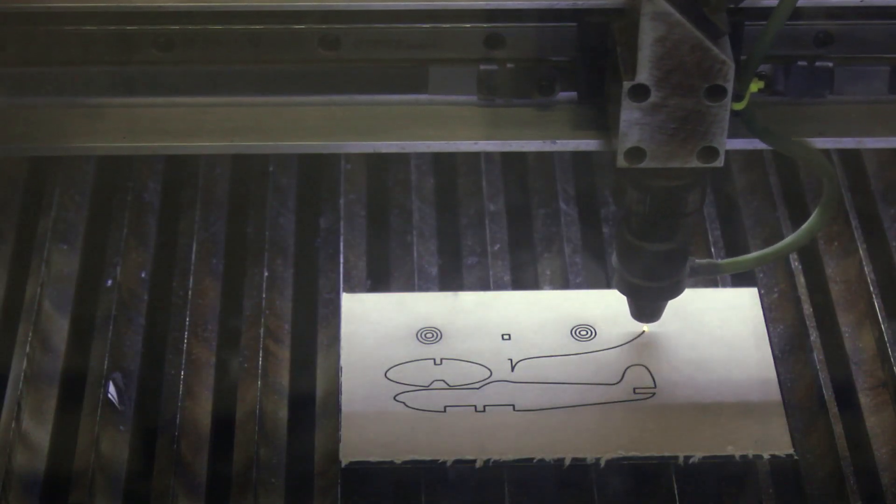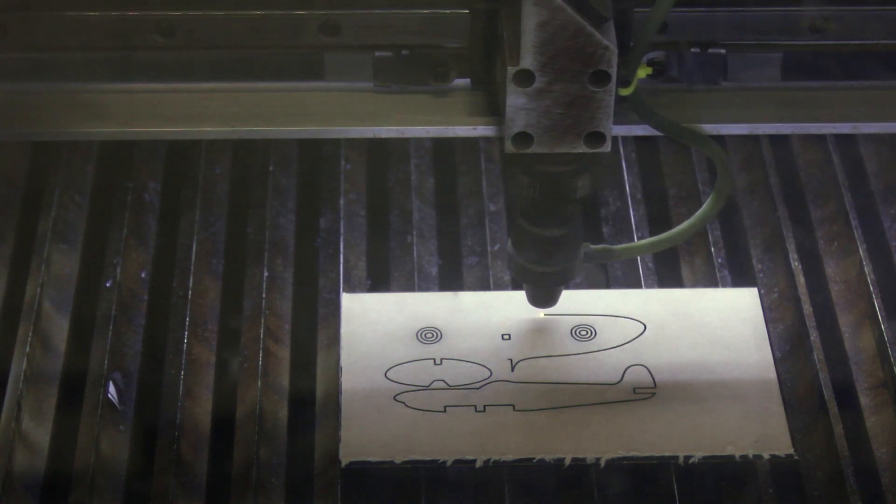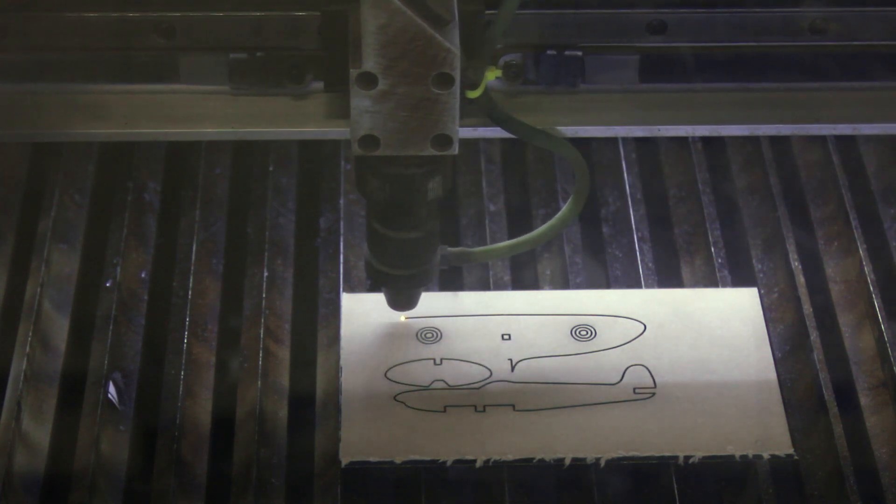The laser is about 75 watts so it's not strong enough to cut through metals. Some metals you can etch or engrave but you can cut through plastics, woods, fabrics, paper, cardboard, and all sorts of useful things like that.